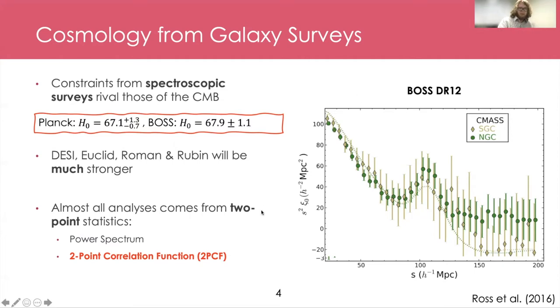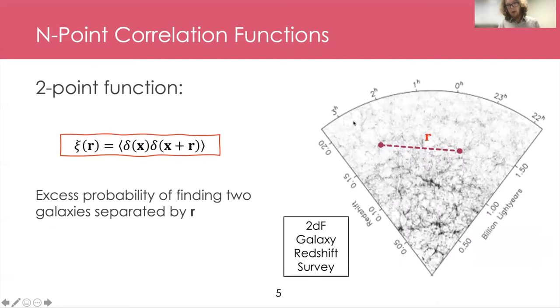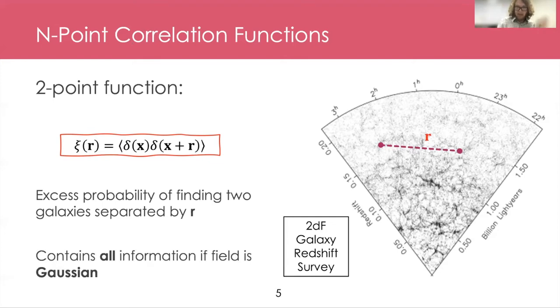So to start off with, let me define slightly more formally what I mean by these two, three and four-point correlation functions. The two-point function is defined as the excess probability of finding two galaxies separated by some distance r. You can also write it here as a convolution of two density fields. So delta here is the galaxy over density. Basically put two galaxies at different points, say what's the probability we find them separated by this distance r, which could be a vector. And if the universe is Gaussian, this contains all the relevant cosmological information.